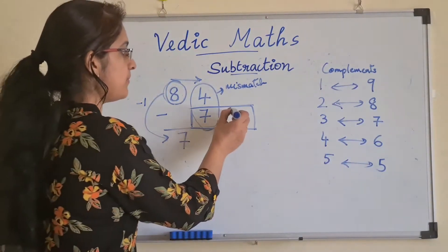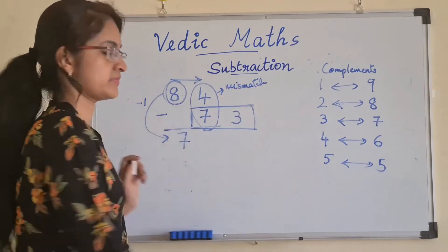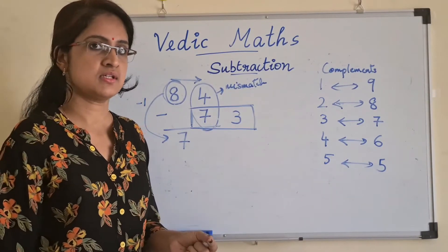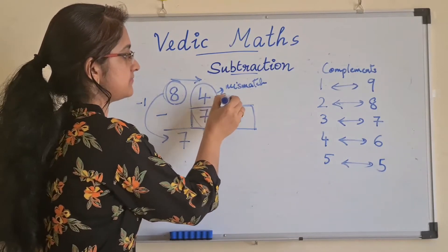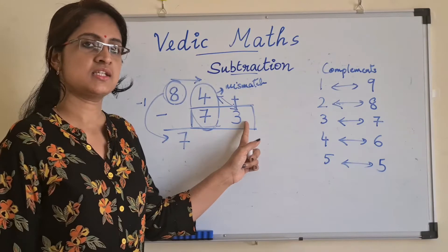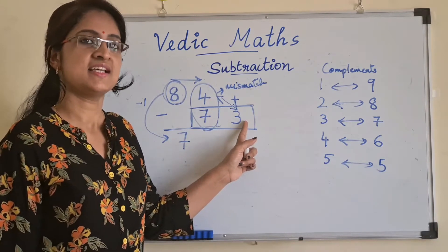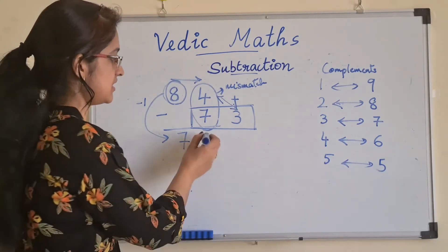You will write the complement first. Next step is, you simply add 4 and 3 together, which is 7. 4 plus 3 is 7. The digit here is 7.